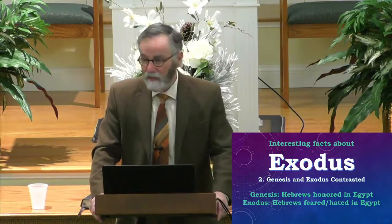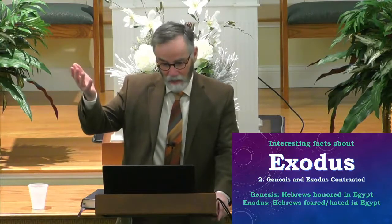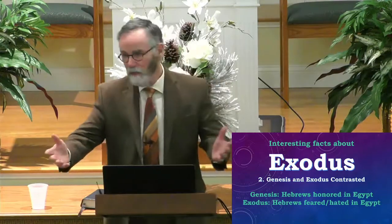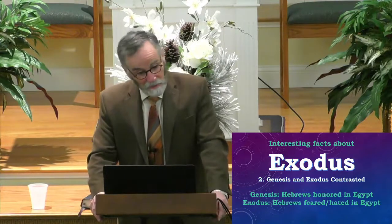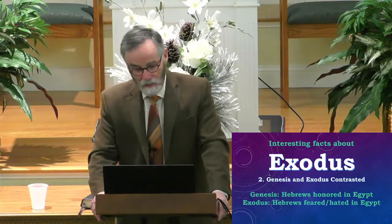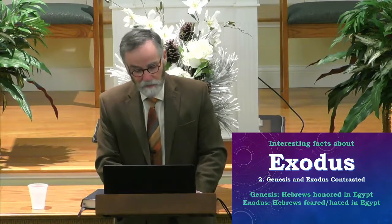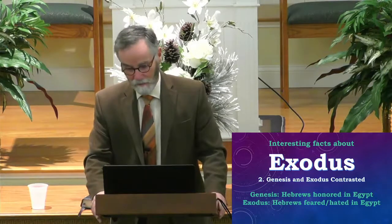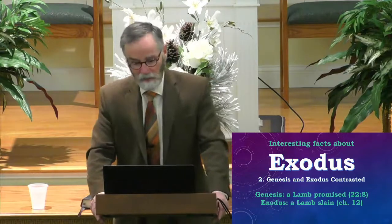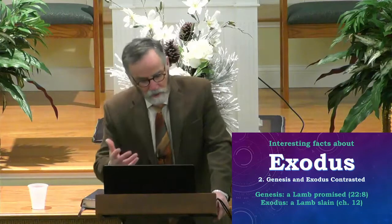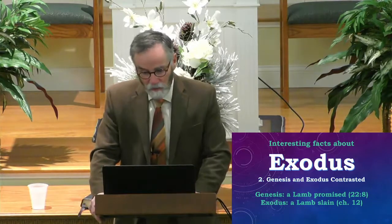Near the end of Genesis, the Hebrews are honored — Joseph becomes the prime minister of Egypt, second only to Pharaoh. His brethren are welcomed into the land, given the best land, and well taken care of for a generation. But in Exodus, the Hebrews are not honored in Egypt — rather, they're feared, and an attempt at genocide occurred because they were multiplying so fast. Also, in Genesis chapter 22 we see a lamb promised — 'God will provide himself a lamb.' In Exodus chapter 12, we see a lamb slain — the Passover lamb.